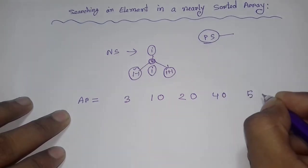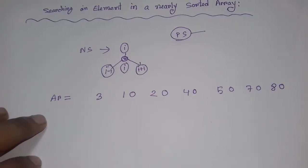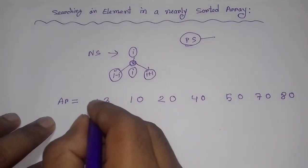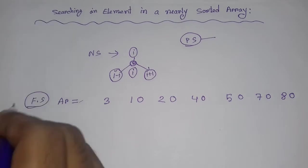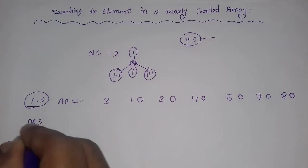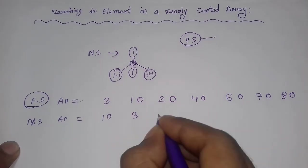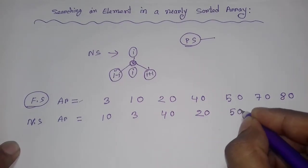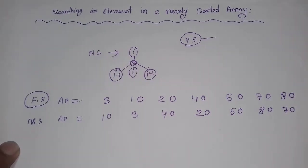For example, consider the array: 3, 10, 20, 40, 50, 70. This is nearly sorted. Now let's look at another case — this array is not fully sorted. This is what we mean by nearly sorted.